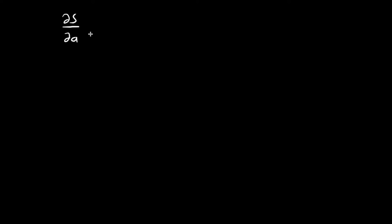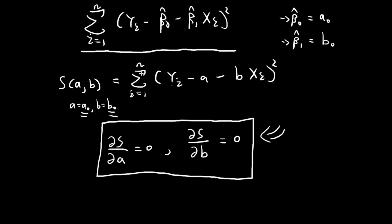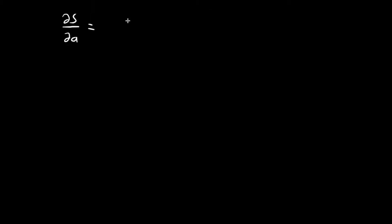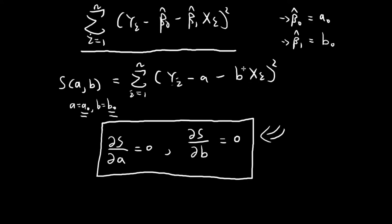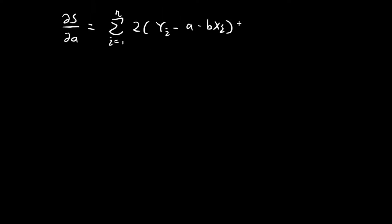Now let's first consider the partial derivative of S with respect to A. We're going to differentiate this function with respect to A using the chain rule. We're going to get 2 times (yi minus A minus B times xi), and then since we're using the chain rule, we differentiate the inside term with respect to A, giving us negative 1. And then we set this equal to 0.